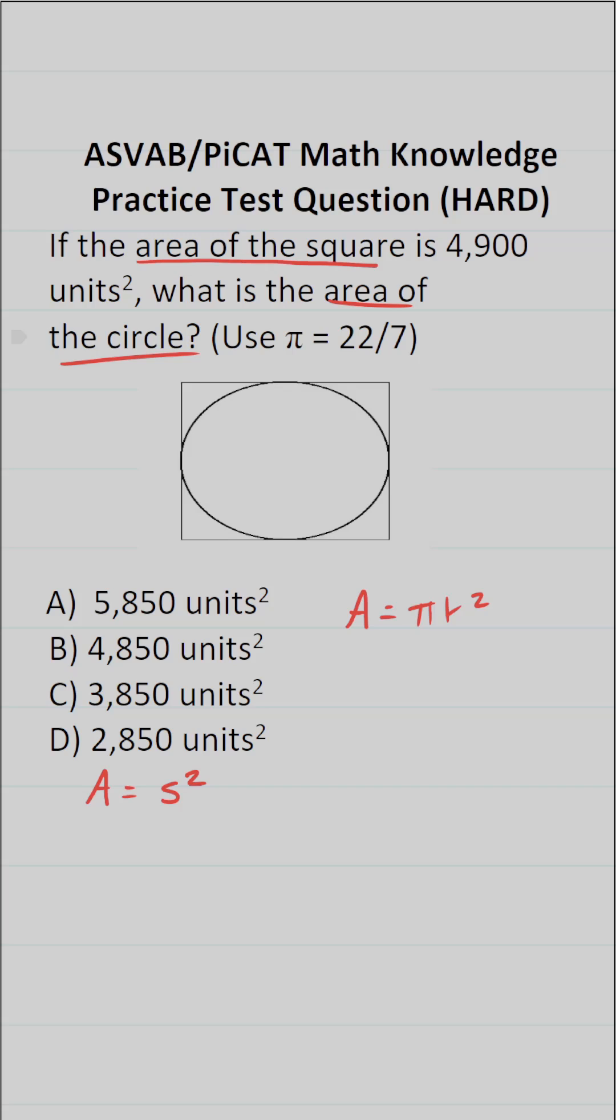In this case, we know the area of our square is 4,900 square units, so I can actually solve for s here. Again, the area of this square is 4,900 square units. That's equal to s squared. If I take the square root of both sides, this crosses out, leaving me with s over here.